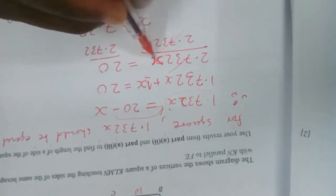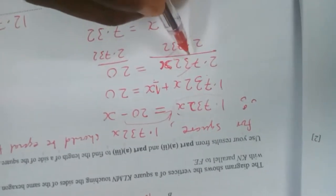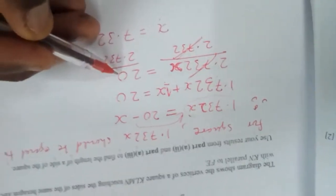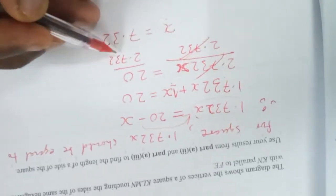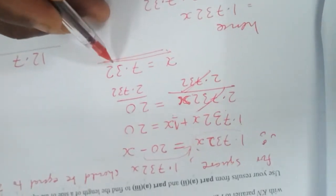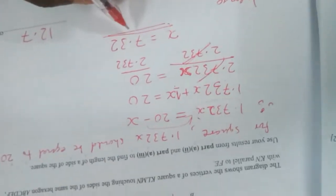Now, since we are looking for x, we shall have to divide 2.732 on both sides, and this side will go away, we shall remain with x. And hence, 20 divided by 2.732, we shall obtain 7.32. Remember, this is x.